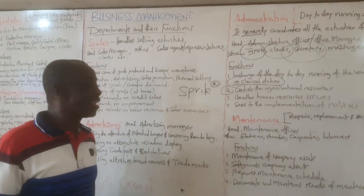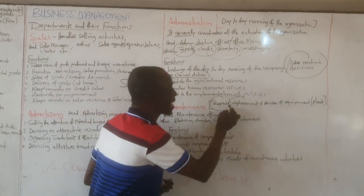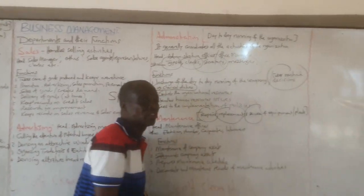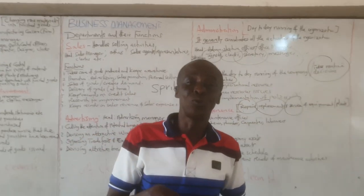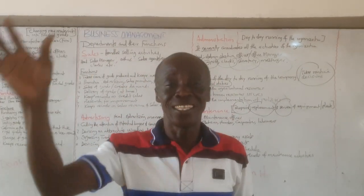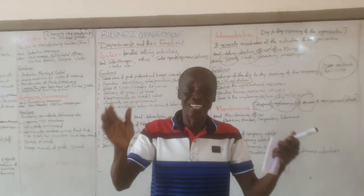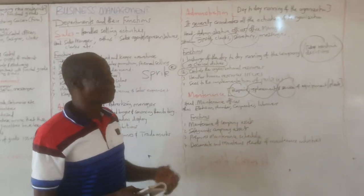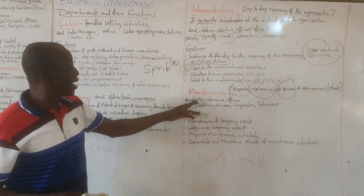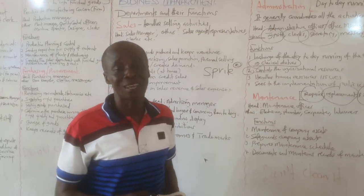The maintenance department deals with repairs, replacement, and servicing. They repair machines and equipment, and replace items that cannot be repaired — for example, replacing fan blades or entire fans in school. The maintenance officer heads the department, working with electricians for electrical problems, plumbers for pipe issues, carpenters for doors or roofing, and laborers.